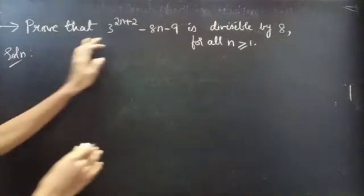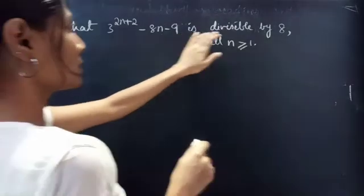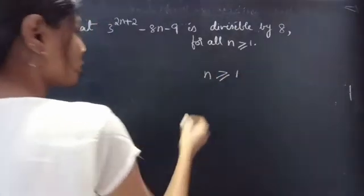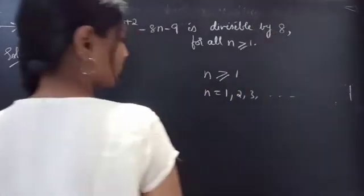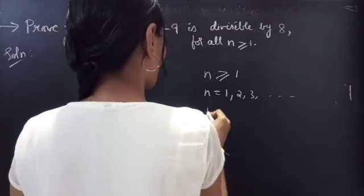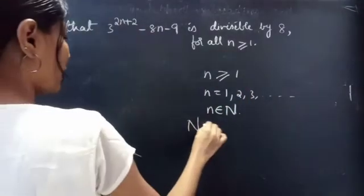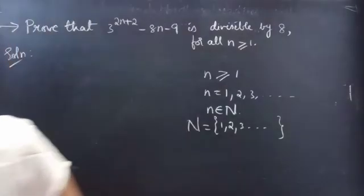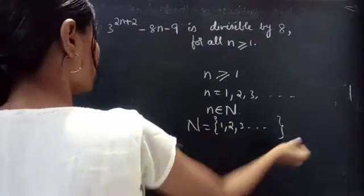Solution. So here we are asked to prove that 3 power 2n plus 2 minus 8n minus 9 is divisible by 8 for all n greater than or equal to 1, which means n equals 1, 2, 3 and so on, which means that n belongs to natural numbers, since n has 1, 2, 3, 4 and so on — the set of natural numbers.